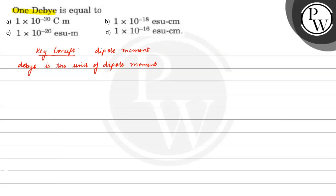Dipole moment is equal to charge times the distance between those two charges. 1 Debye is equal to 1 times 10 raised to the power minus 18 esu-centimeter. Esu is the unit of charge and centimeter is the unit of distance.